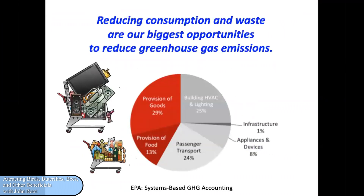One thing we can do to help our environment is simply to buy less. This graph shows that provision of goods at 29% and provision of food at 13% together total 42% of our individual carbon footprint. Every day we make decisions about what we purchase, and perhaps we can give some second thought to the impacts of the products we're buying. By doing so we can save money. Frugality can include buying something secondhand, doing without it, or whatever makes sense — and we can help wildlife at the same time.